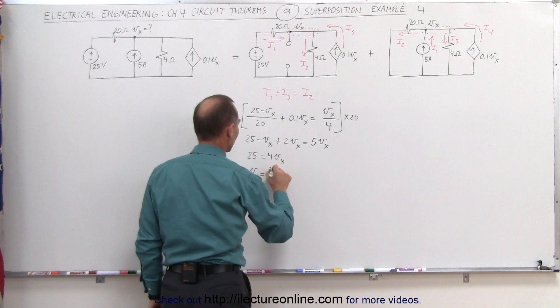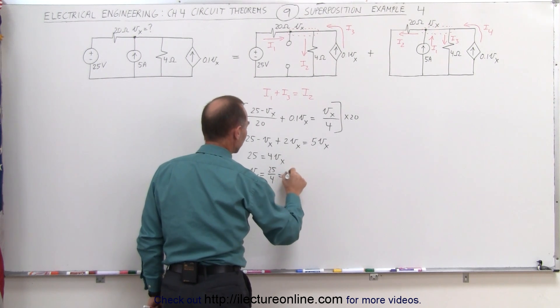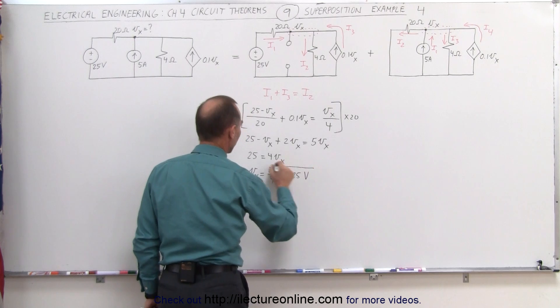Which means V sub X is equal to 25 divided by 4, which is 6.25 and that would be volts.